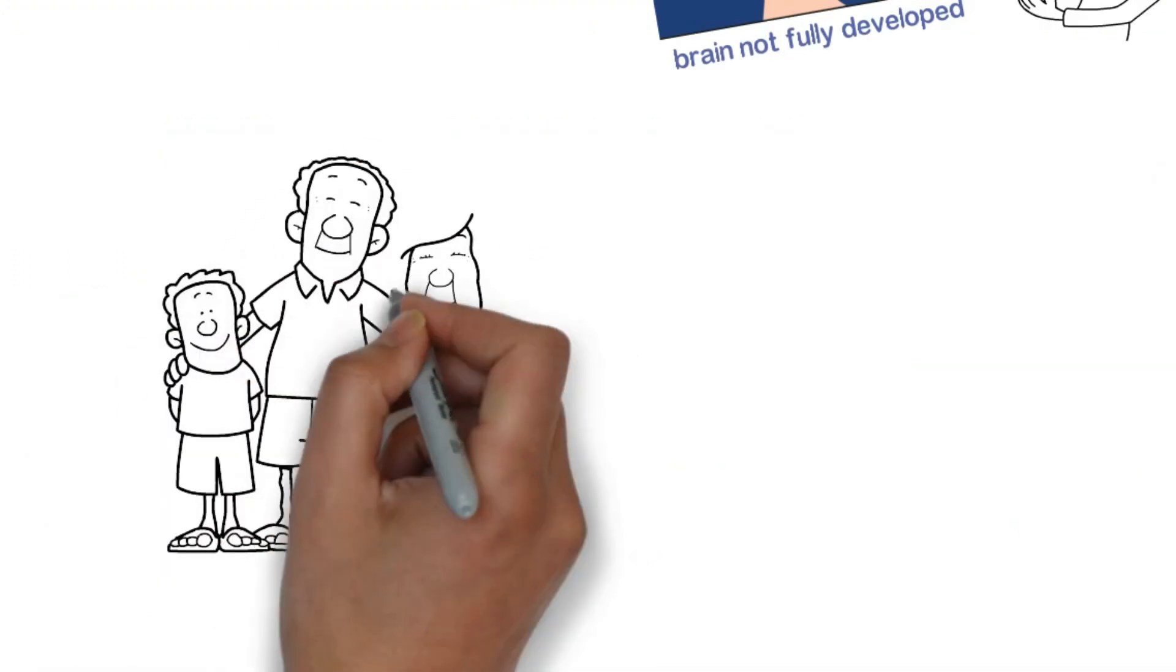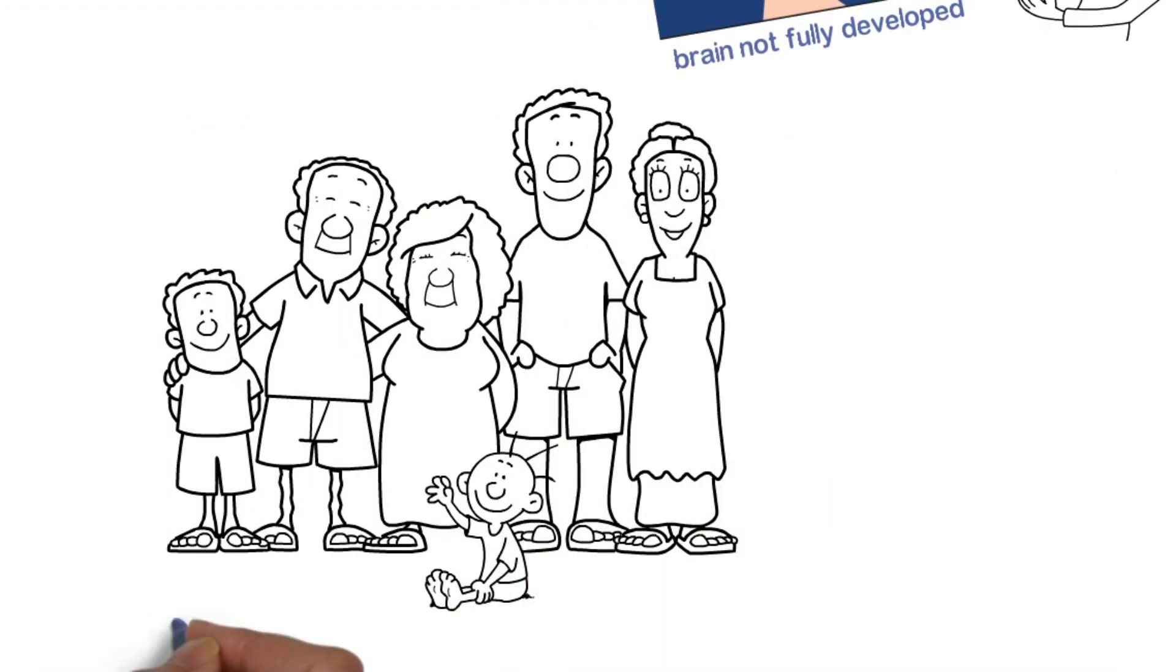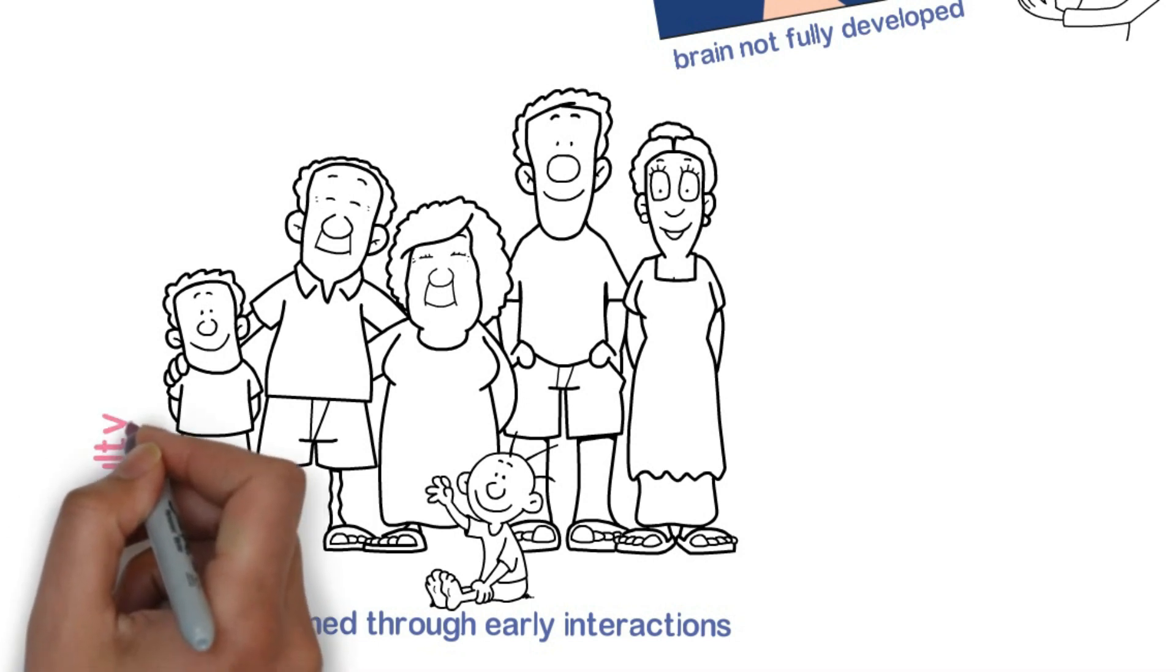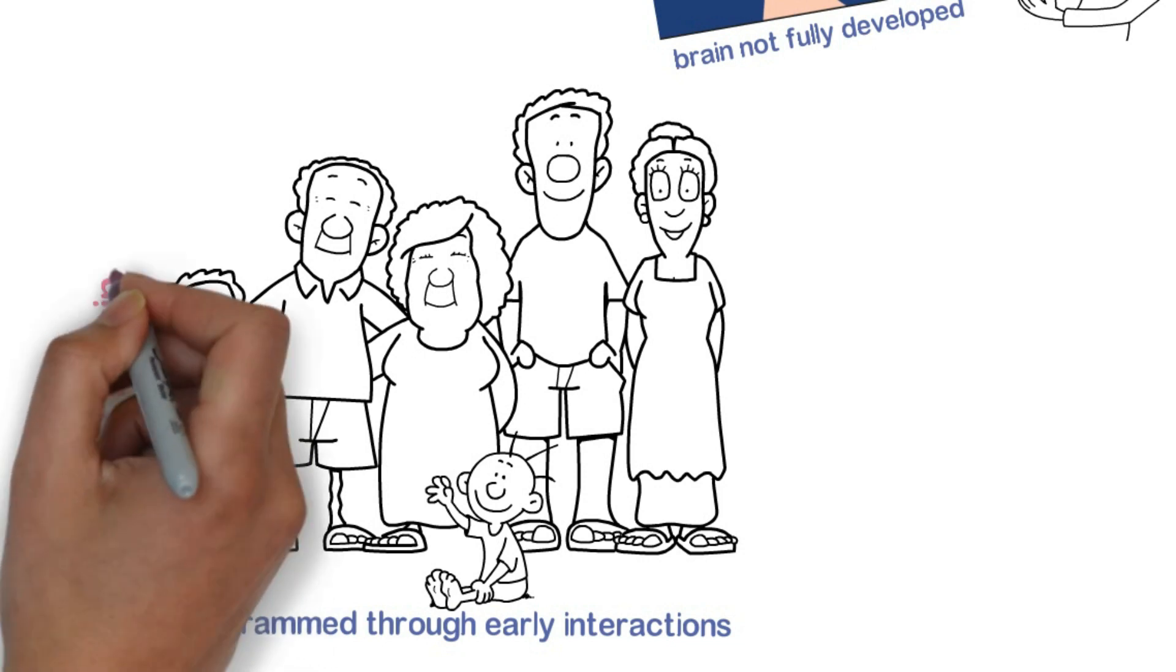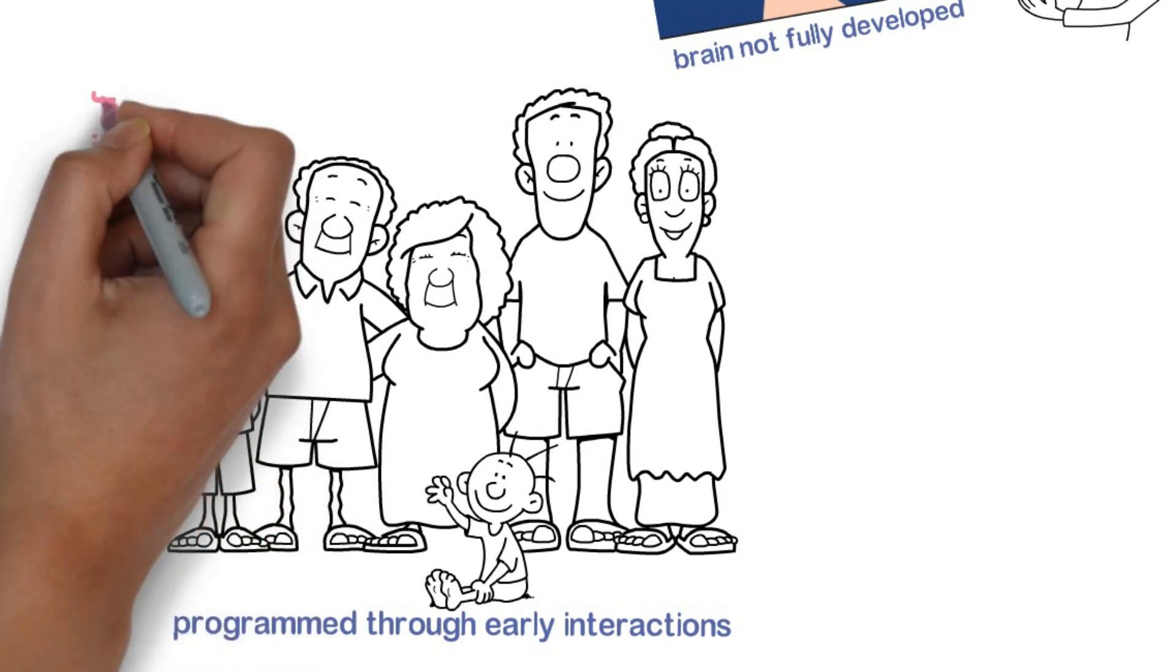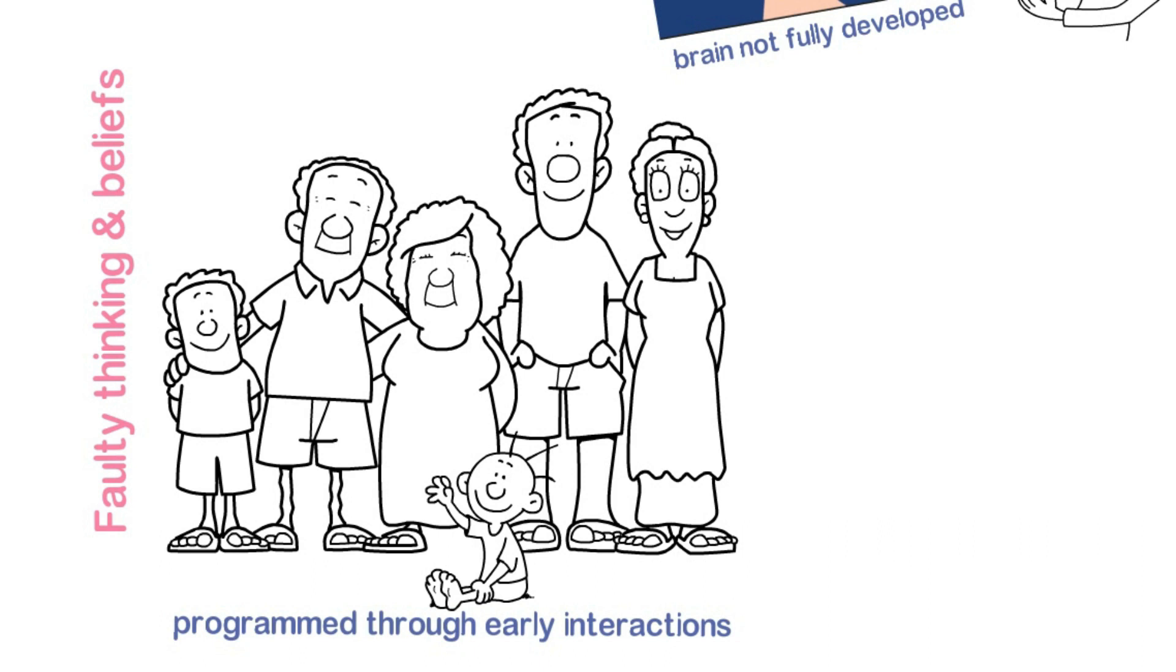So whatever a child hears from the adults around them, that's truth for them. Now as a child, your subconscious mind got programmed through your interactions with your parents, your grandparents, your friends, your relatives, your teachers, and the likes. Now majority of us, we are carrying faulty thinking and faulty beliefs in our subconscious mind from those early interactions.